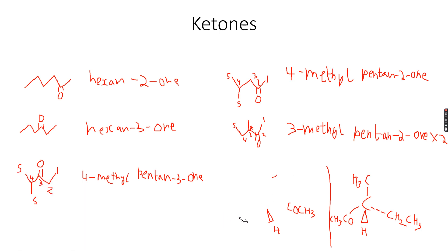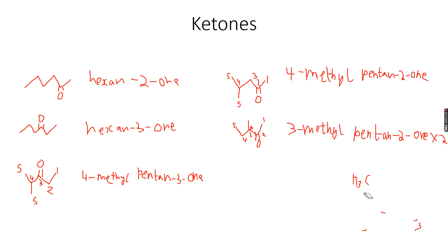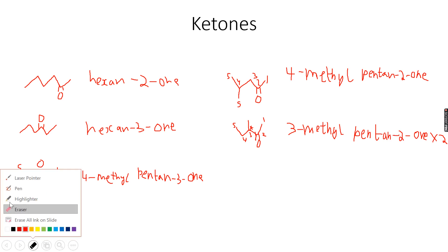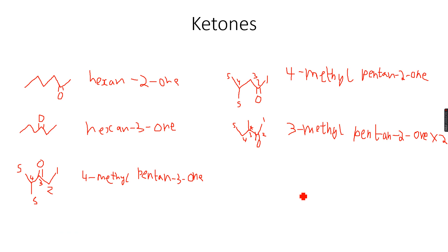I think there is one more structural isomer we can make for hexanone. The structural isomers we've made so far are: hexane-2-one, hexane-3-one, 4-methylpentane-3-one, and 4-methylpentane-2-one — which exists as two stereo isomers. Now let's draw one more structural isomer.